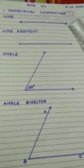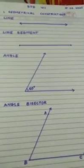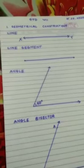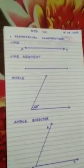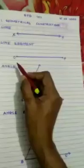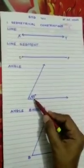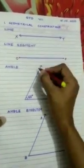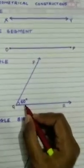Here we can name the line as line XY. A line segment has two endpoints, so we can name this line segment as OP. This is an angle, and you can see the measurement of this angle is 60 degrees — that is angle PQR is 60 degrees. We can write this as: measure of angle PQR is 60 degrees.